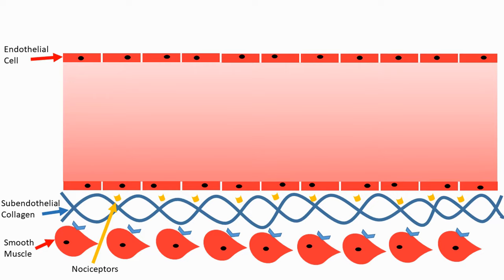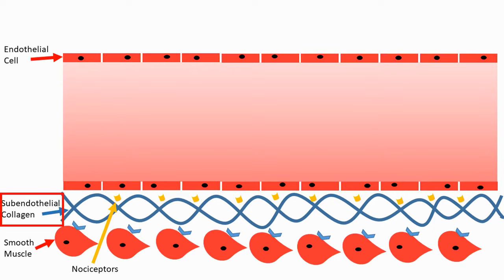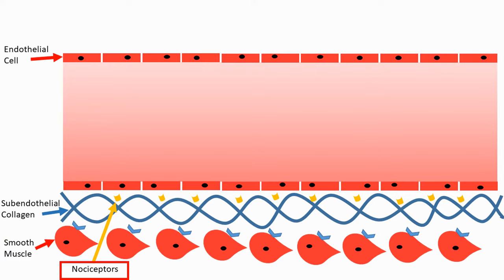Here you can see the blood vessel. It is lined by the endothelial cells. Underneath the endothelial cells lies the subendothelial connective tissue, which is composed of collagen. Underneath that are the smooth muscles, which are responsible for contraction and dilation of the blood vessel. There are also yellow receptors called nociceptors, commonly known as pain receptors.